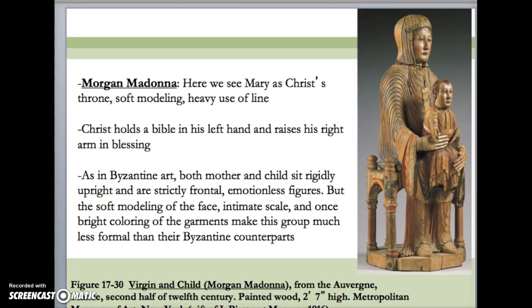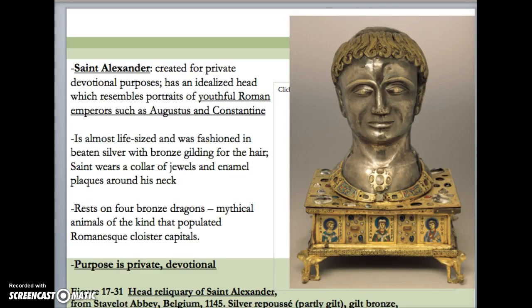After we moved from church architecture to sculpture, we talked about how monumental sculpture was pretty rare during this time. Pretty much the only large-scale sculpture we see is the tympanum relief sculpture. Small-scale sculptures became increasingly popular. Some, such as the Morgan Madonna, were meant to be placed inside a church for public devotional purposes, while other pieces, such as the head reliquary of St. Alexander, were made for the wealthy — kings or rulers — placed in their homes for private devotional purposes. These were often very decorative, covered with silver, gold, and gemstones, with little portraits of saints at the base.